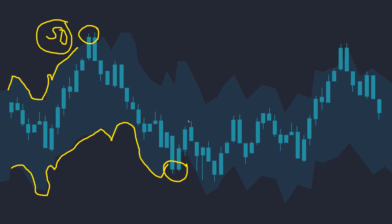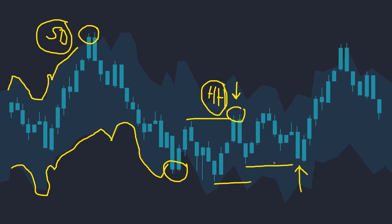The second way to time mean reversion entries is to use local short-term price highs and lows as entry points, where you sell when the market breaks the highest high over a specified number of bars, and you buy when the market breaks below the lowest low. This is what I use in one of my algo strategies traded on daily time frames and futures markets. I'm going to show you an example setup of this strategy and its equity curve shortly.